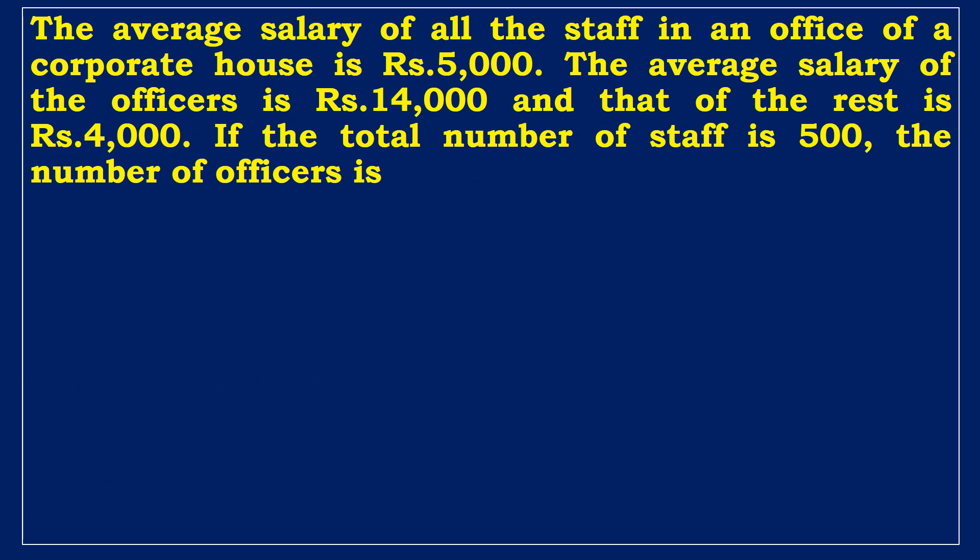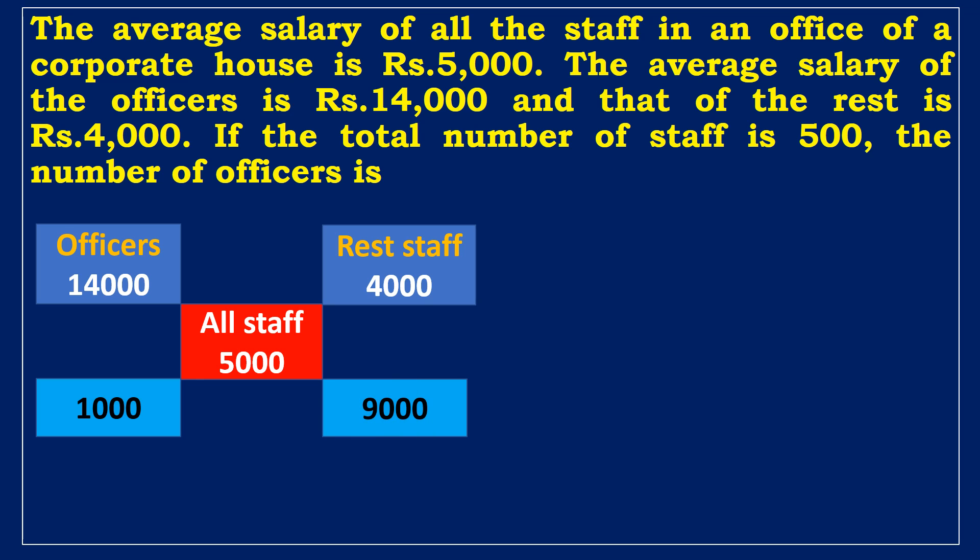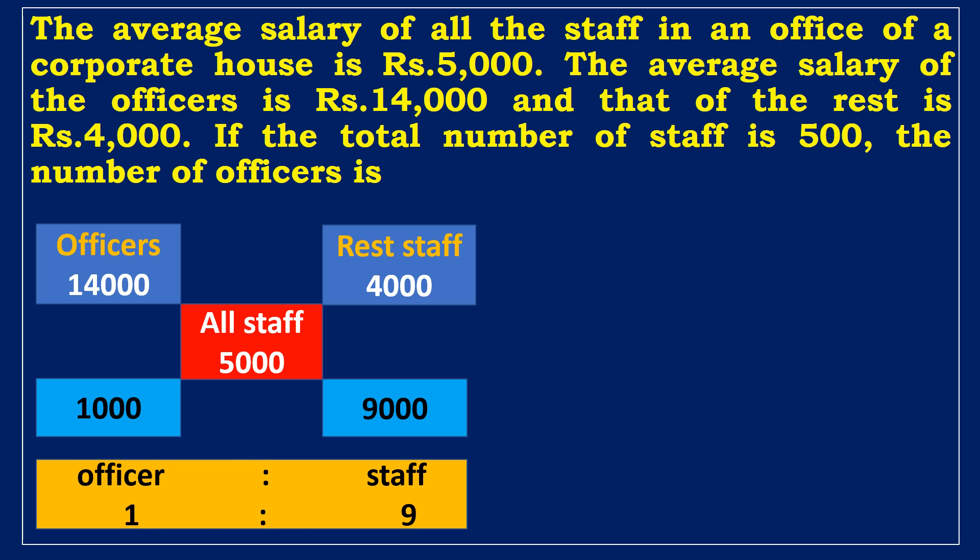Here is another example of the average concept. The average salary of all the staff in an office is rupees 5000. The average salary of the officers is rupees 14,000. If the total number of staff is 500, the number of officers is. We can solve this type of question in a smart way using the proportion technique. The average salary of all the staff is rupees 5000. The average salary of the officers is rupees 14,000, and that of the rest is rupees 4000. The difference between 5000 and 4000 is 1000. Similarly, the difference between 14,000 and 5000 is 9,000. It means that the ratio of the number of officers to the rest of the staff is 1 to 9. 1 plus 9 equals 10. Total value 10 is 500 staffs. Then, one value is 50. So, the number of officers is 50, and the number of the rest of the staff is 500 minus 50 equals 450.